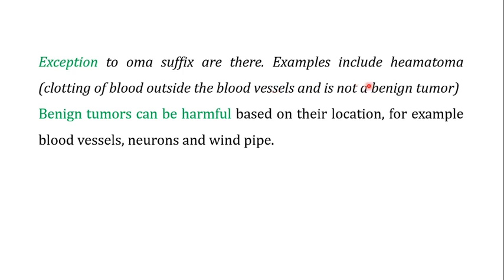There are exceptions to the '-oma' suffix — it is not universal. For example, 'hematoma': theoretically this should mean a benign tumor of blood, but hematoma actually refers to the clotting of blood outside the blood vessel and is not a benign tumor. As mentioned, benign tumors can be harmful based on their location — for example, if a benign tumor occurs in blood vessels, neurons, or the windpipe, it becomes harmful to the human body.